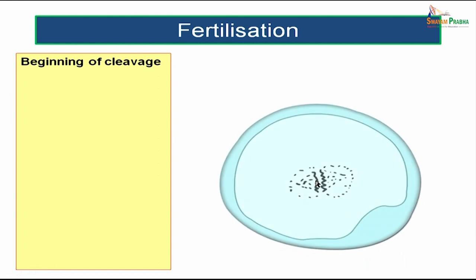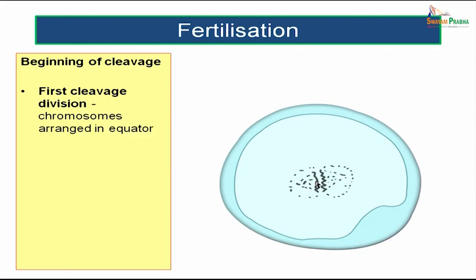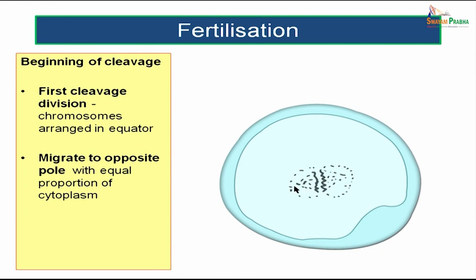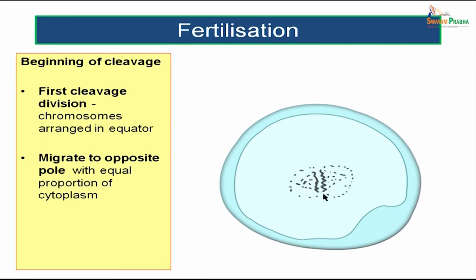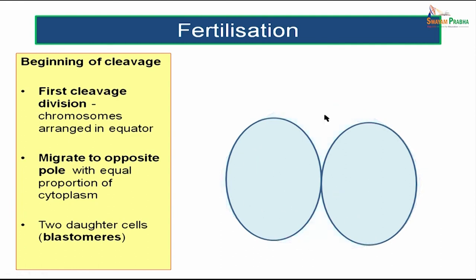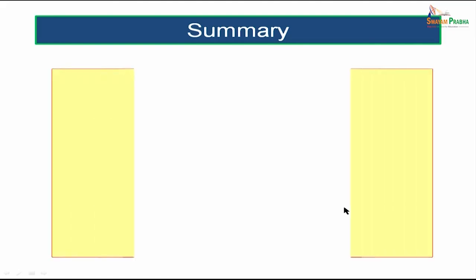Now it is time for the cleavage division. In the first cleavage division, chromosomes are arranged at the equator and then migrate to the poles with equal proportions of cytoplasm. The two daughter cells thus formed are known as blastomeres. These blastomeres have equal amounts of cytoplasm.